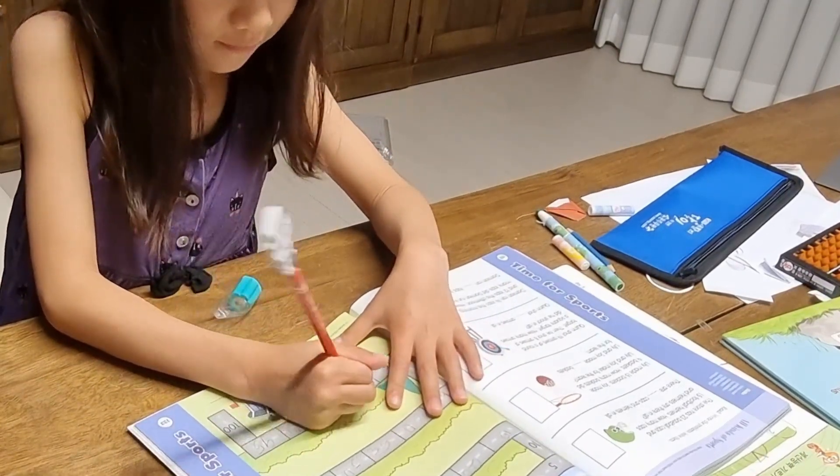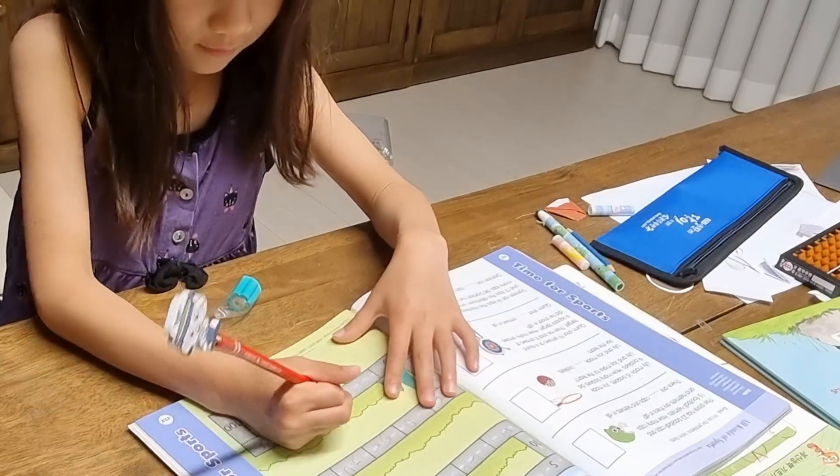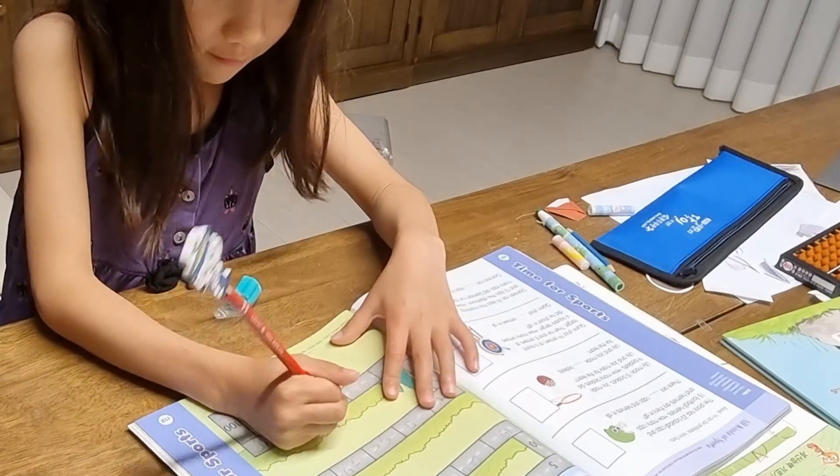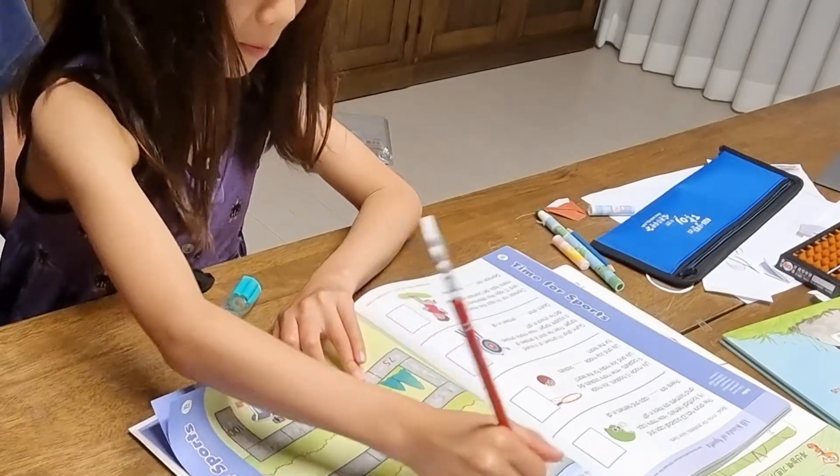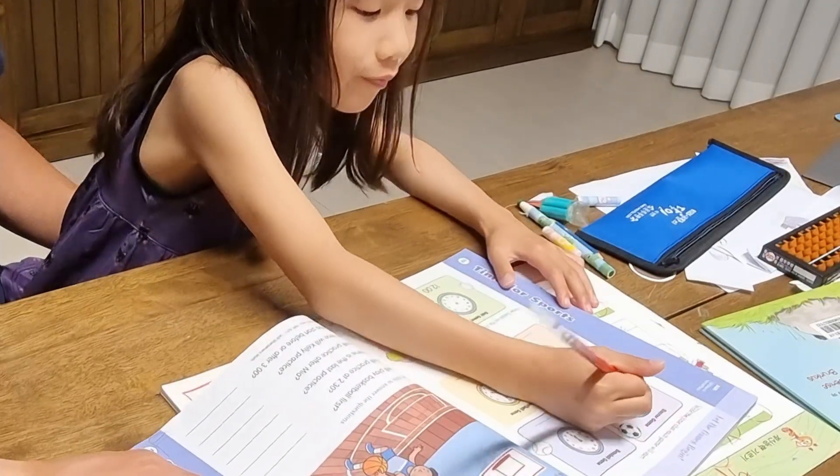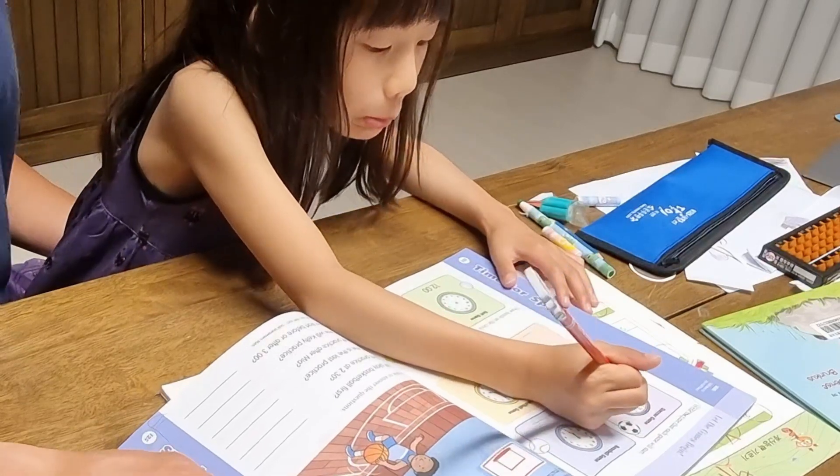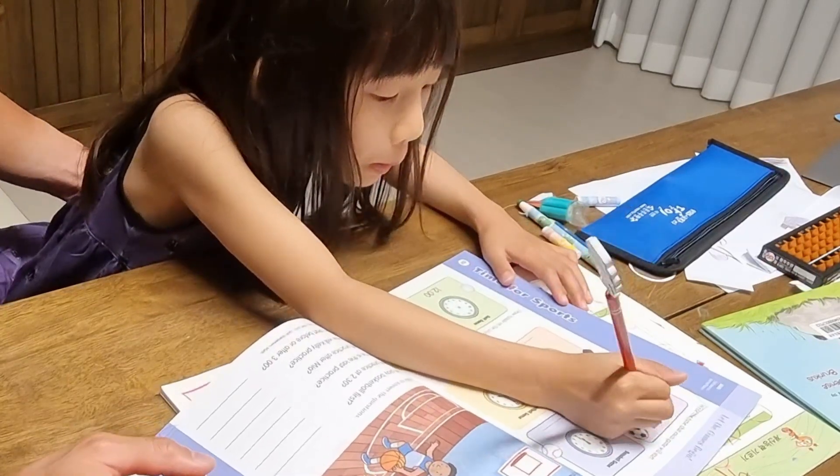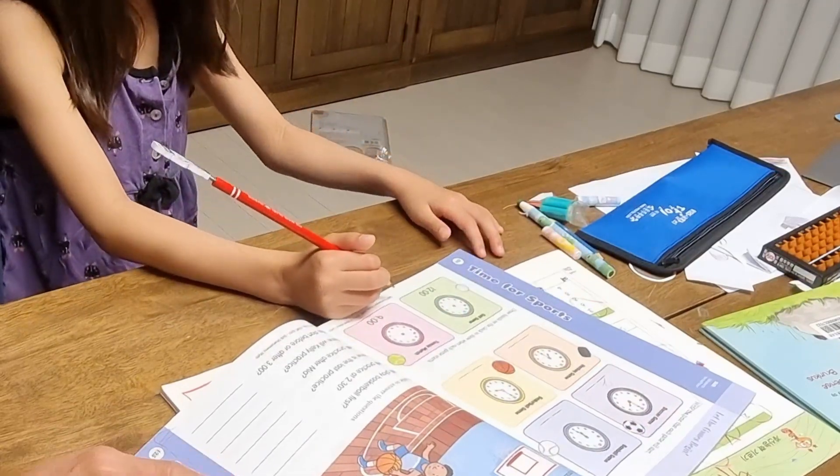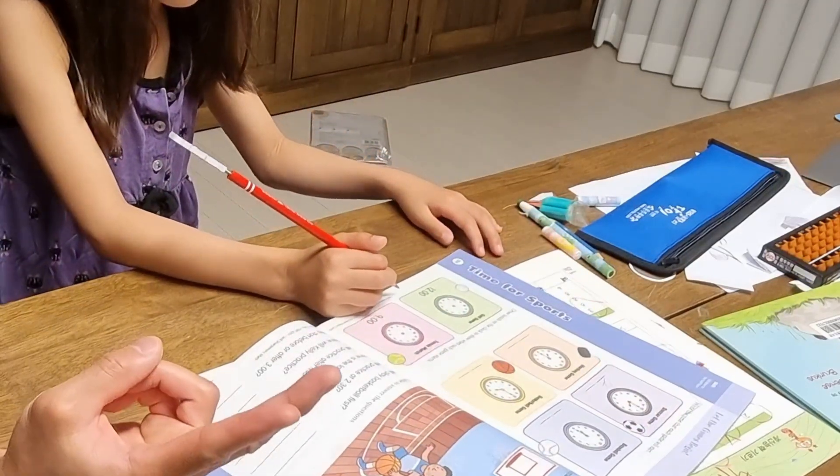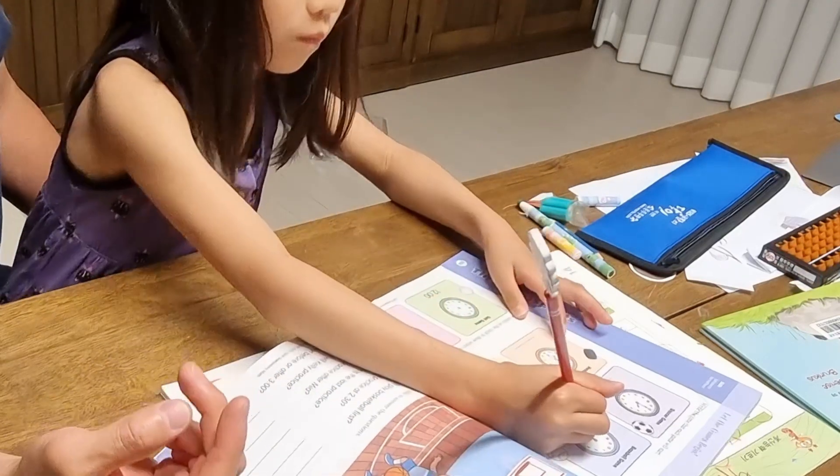Eighty, yes, great. And then last one, eighty-five. Great, yes. Write the time that each game will start. The soccer game will start at two o'clock. How to write the two?